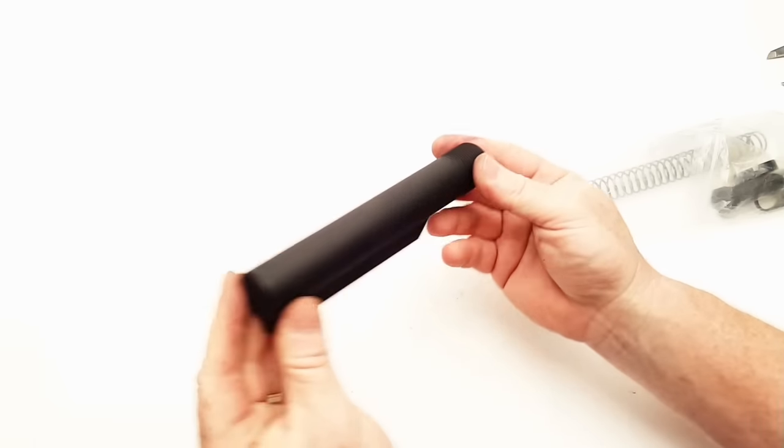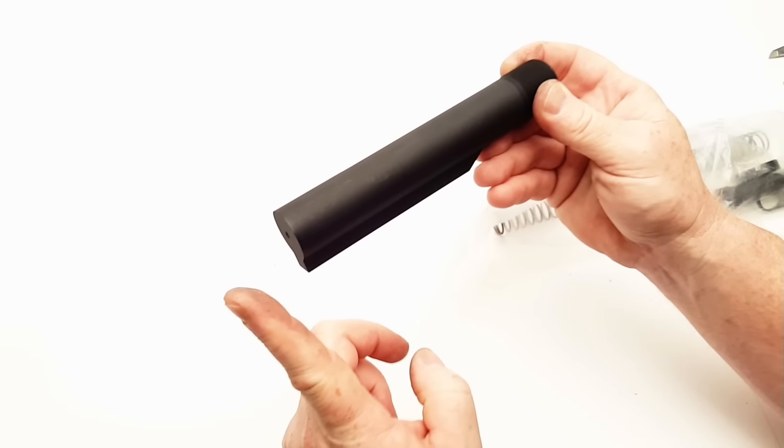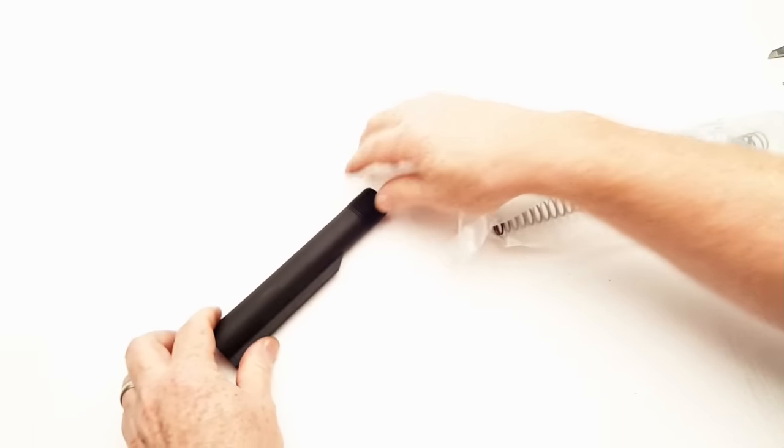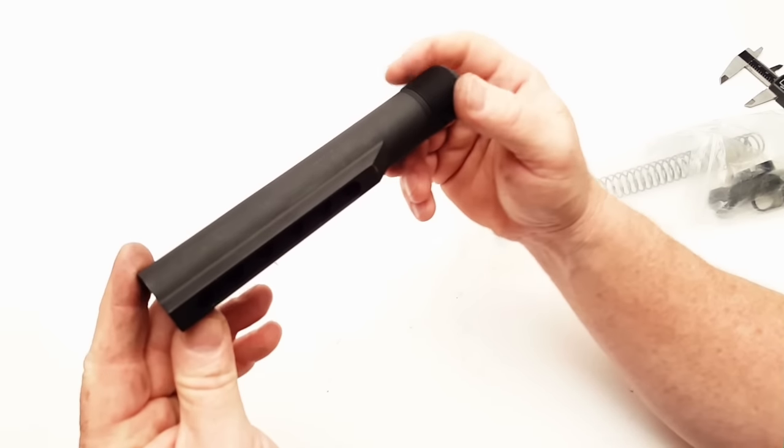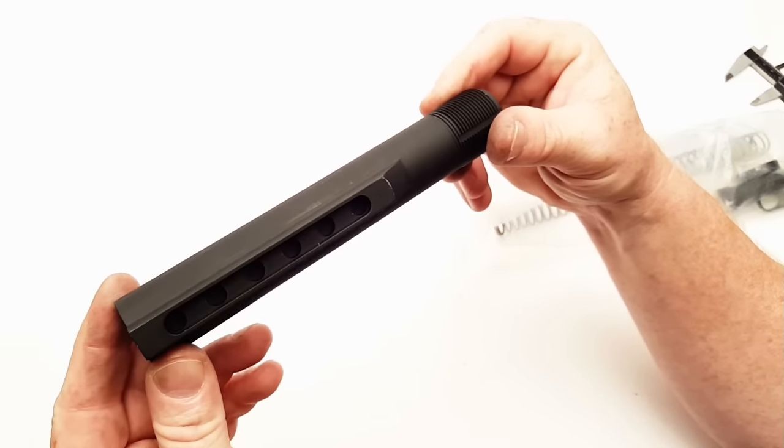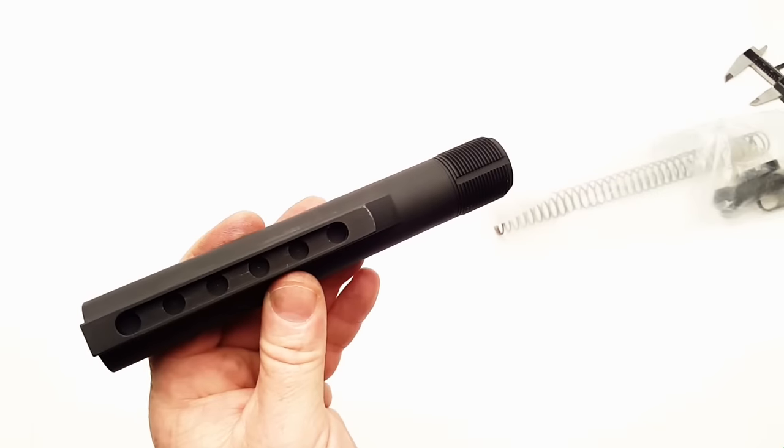And pretty much this is just aircraft grade aluminum. And this is just a regular old buffer tube. Mil spec, mil spec, straight, commercial. It has a slant to it and also a little bit thicker.